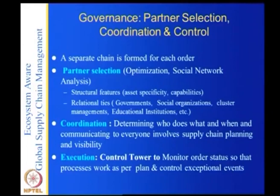Execution is an important part: the control tower monitors order status, ensures processes work as per plan, and controls exceptional events. This is a relatively new thing for supply chains, though it exists in power systems, airlines, and other contexts. Supply chains are used to thinking that once you have planned, things will happen as per plan, but they do not — because of globalization, long supply chains, the nature of disruptions which are not mitigated, and several other reasons. It is important to have a control tower that monitors order status and ensures processes work as per plan.